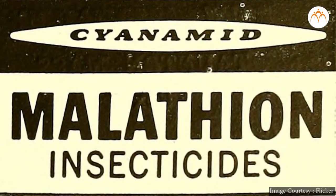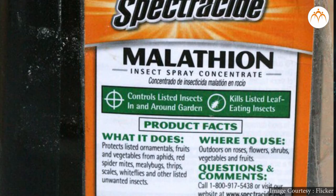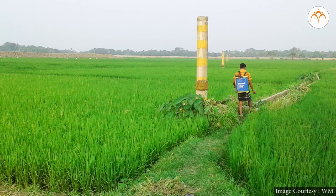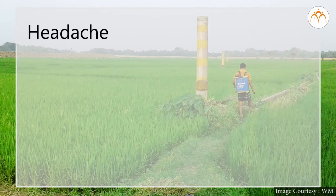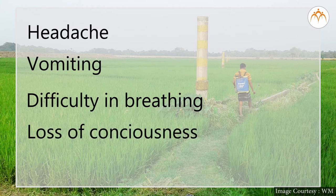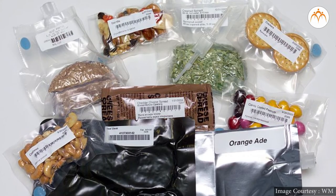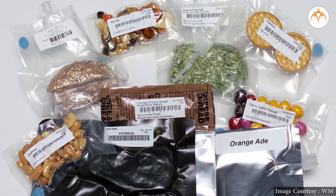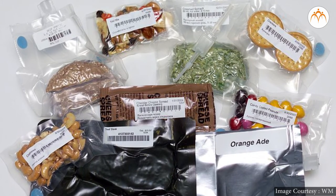Sometimes insecticides like Malathion are sprayed on stored grains. It kills flies, mosquitoes, mites and some other insects that may spoil food grains. But exposure to high amounts of Malathion can cause health issues like headache, vomiting, difficulty in breathing, etc. Sometimes serious health problems like loss of consciousness or even death may occur. Nitrogen gas is also used in food packaging. It preserves quality of food and avoids package collapse.